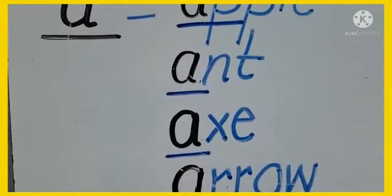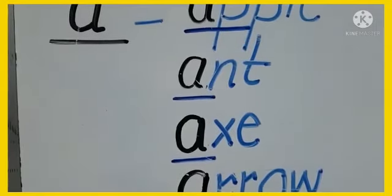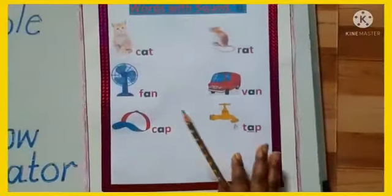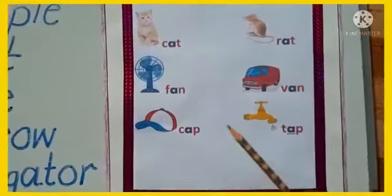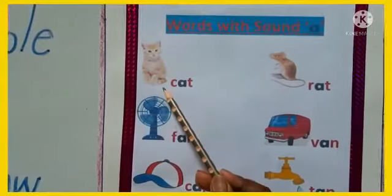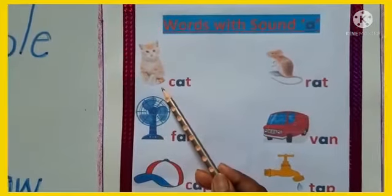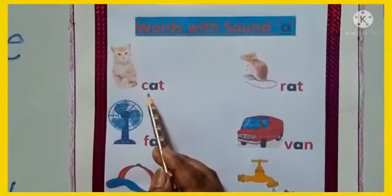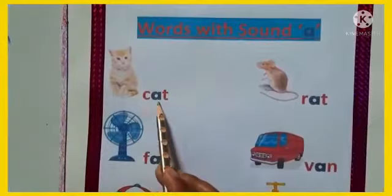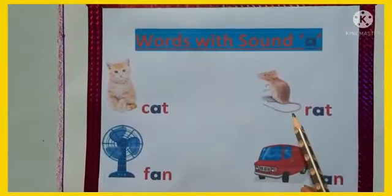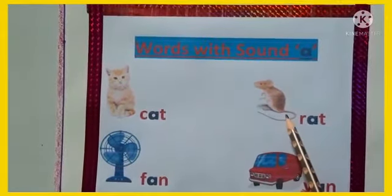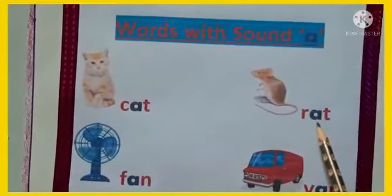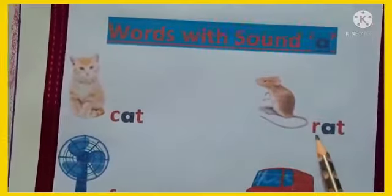Now I am going to show you some pictures. Tell me, what are these? Here you can see some pictures. What is this? This is a cat. C, A, T — Cat. And what is this? This is a rat, a small tiny creature. R, A, T — Rat.